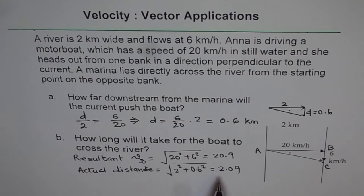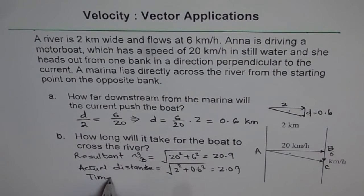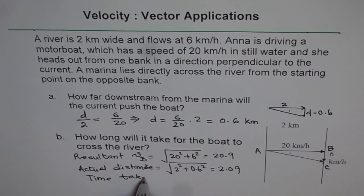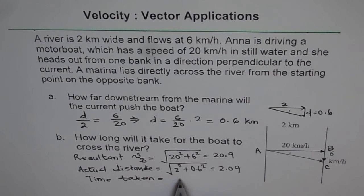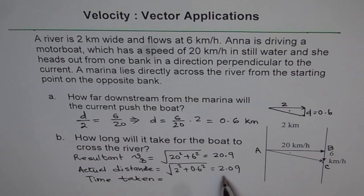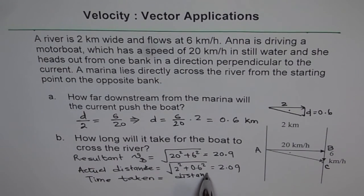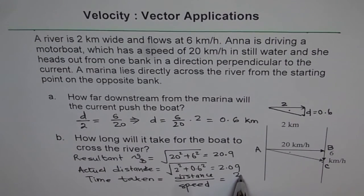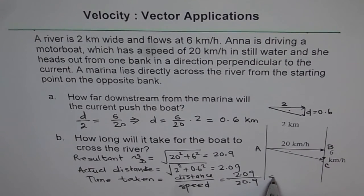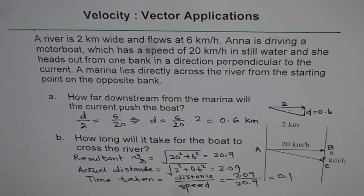Now from here, we can find the time taken. So the time taken is equal to distance over speed. So the distance is 2.09, you can write distance over speed. That is 2.09 over 20.9. And that is 0.1.